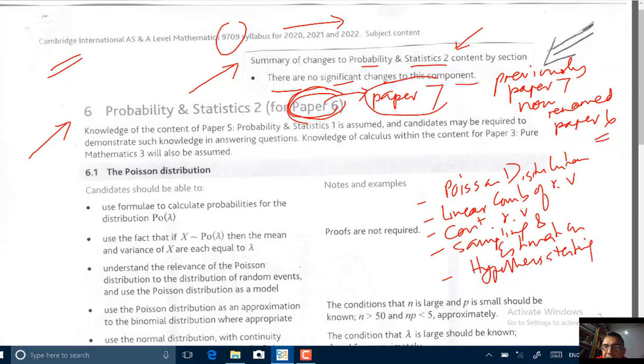So, again, these are all the topics we used to cover in our previous Paper 7. Now, the whole thing has been renamed Paper 6. So, again, very important line. For 2020 onwards, 9709.